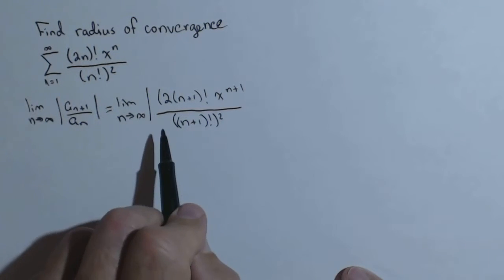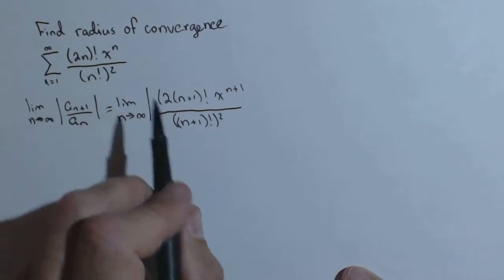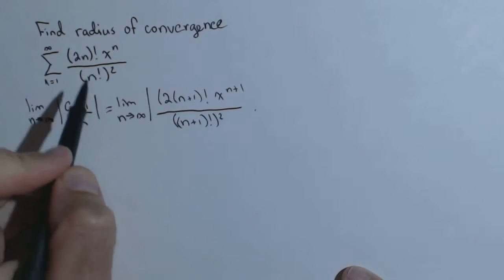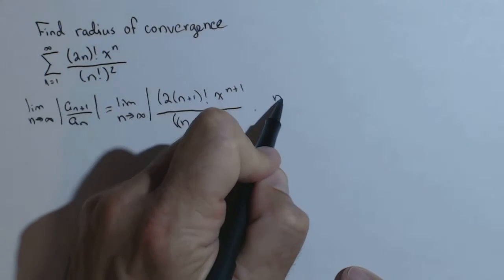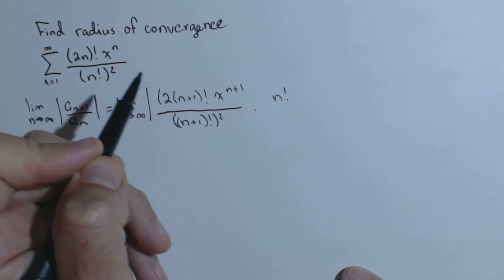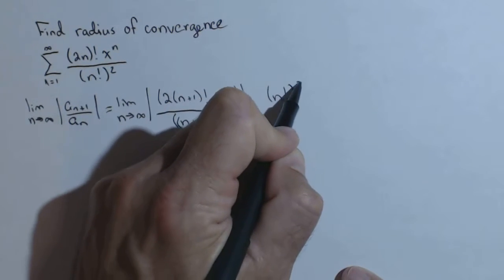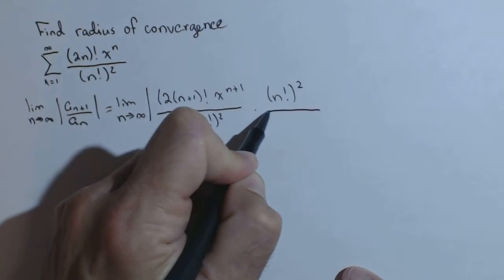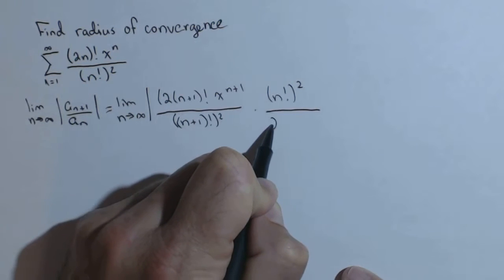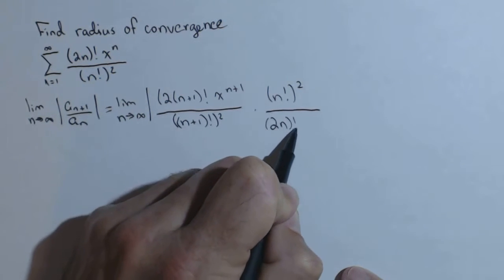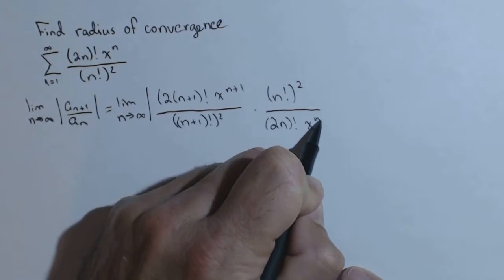And we really need to pay attention to our parentheses and where the plus 1 goes. Now times the reciprocal of our original. So, n factorial squared over 2n factorial x to the n.